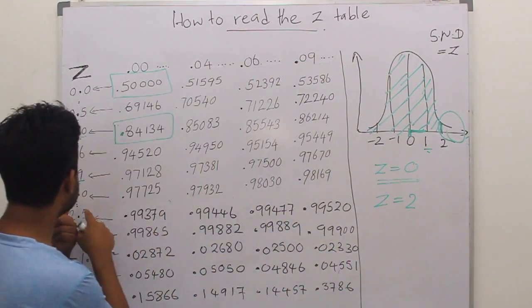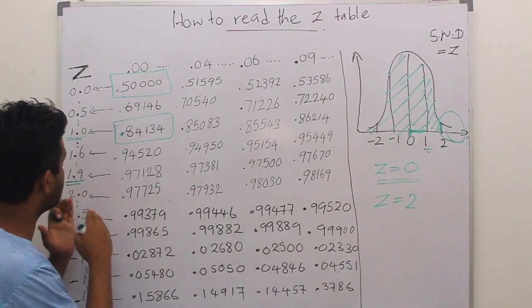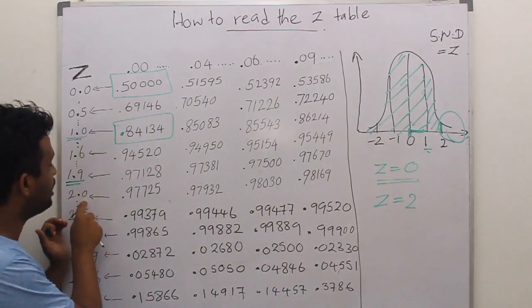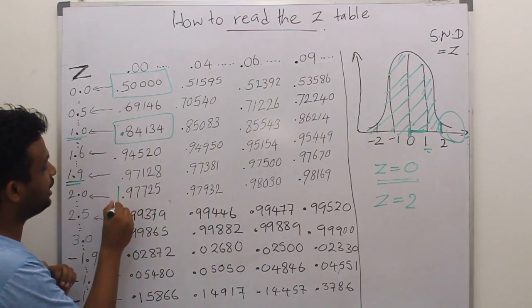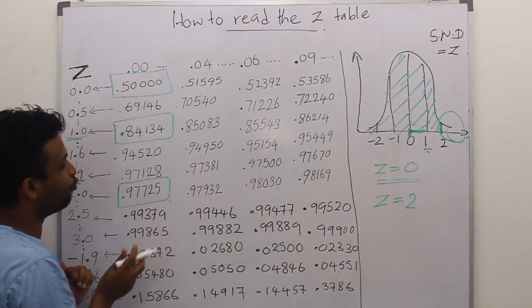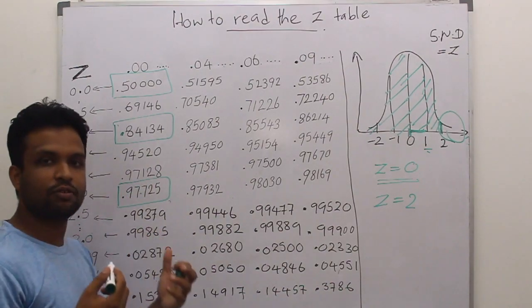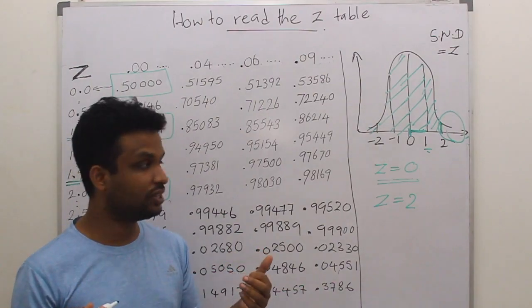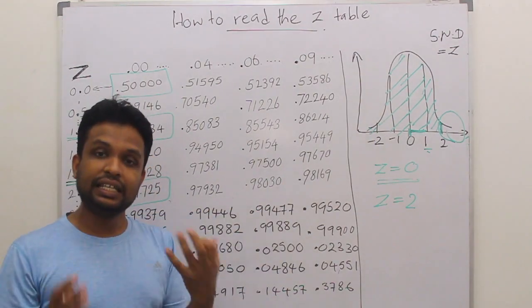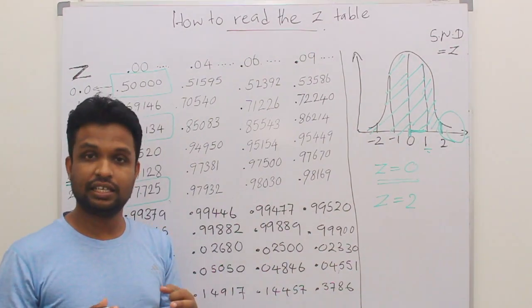So this total green colored area must be 97.5%. So let's see that one. That is 2.0 and this side, we know it's 0% because we are interested in 2.0. And the probability is 0.97725. That means approximately 97.7 or 97.5% of the observations are there. That is how exactly you read the Z table.